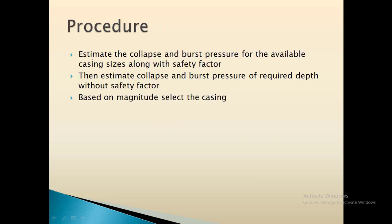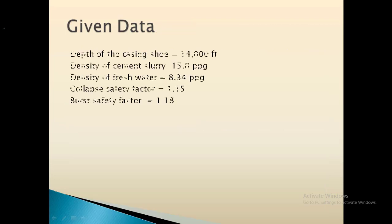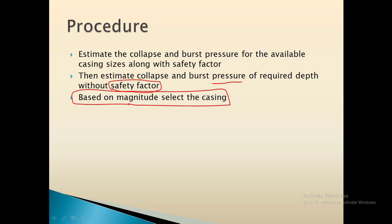For the procedure: first, calculate how much burst and collapse pressure the casing can handle along with the safety factor. Then estimate the collapse and burst pressure at the required depth without the safety factor, because the safety factor is applied in terms of the casing, not the formation. Based on magnitude, select the appropriate casing — wherever the values match, that is the casing to install.